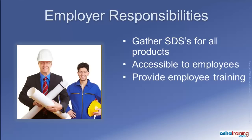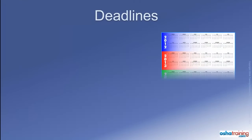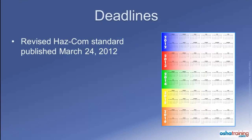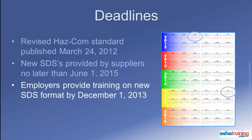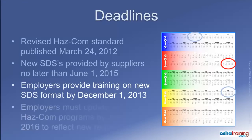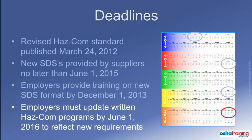Speaking of deadlines, here is an overview of some very important dates. The Revised Hazard Communication Standard, which requires the use of GHS-compliant Safety Data Sheets, was published on March 24, 2012. Manufacturers and distributors of hazardous chemicals and products have until June 1, 2015 to begin distribution of the new Safety Data Sheets. However, many of them have already started providing Safety Data Sheets that meet the new format. Therefore, OSHA requires employers to begin training all their workers on how to read and understand the new Safety Data Sheets, and they have until December 1, 2013 to get that training complete. Employers must also update their written hazard communication programs to reflect the changes brought about by the adoption of the GHS System of Labeling and Hazard Classification.